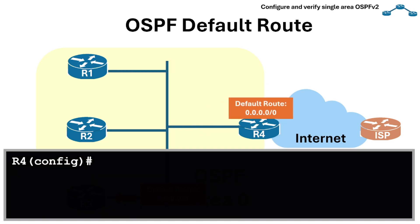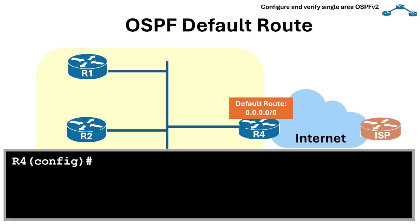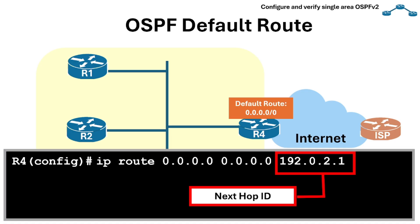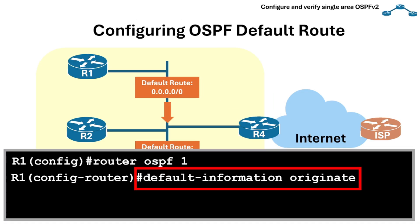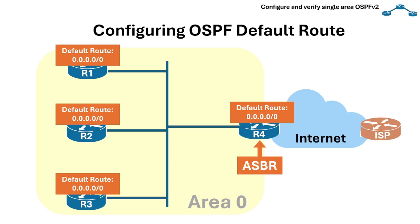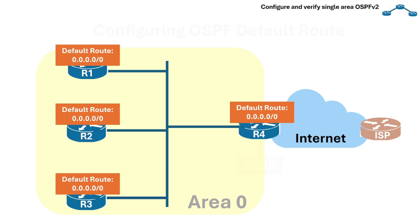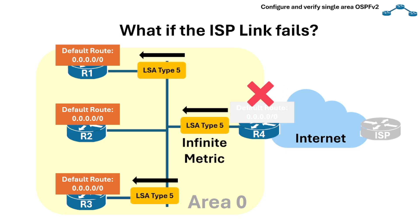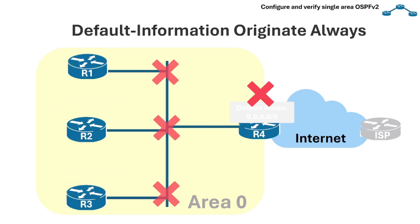First, we configure a default static route on the border router, router 4, using this command — where 192.0.2.1 is the next-hop IP address. Then we use the command default-information originate to tell OSPF to advertise that default route. Router 4 then advertises this default route to routers 1, 2, and 3 using OSPF, making router 4 an ASBR or Autonomous System Boundary Router. But if the ISP link fails, router 4 will remove the default from its own routing table and send a type 5 LSA with infinite metric, so other routers delete the default route too. If the router loses its own default route, it stops advertising it to the other OSPF routers.